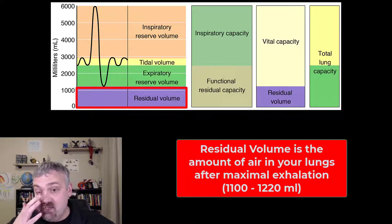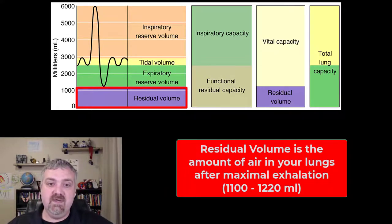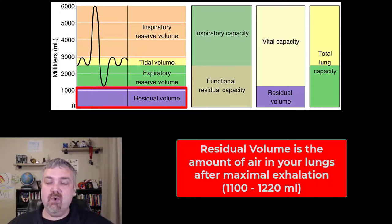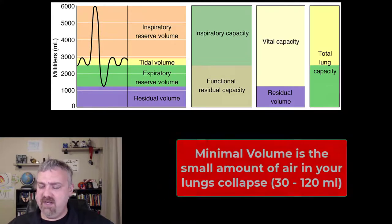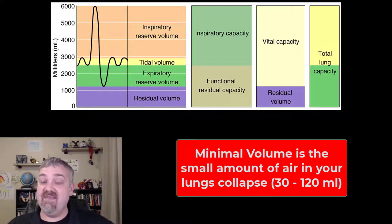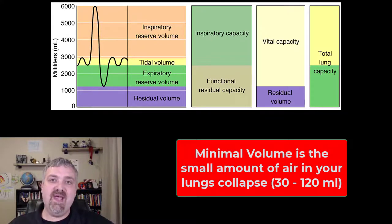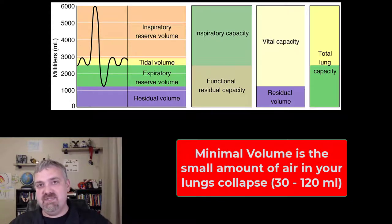There at the bottom on the left-hand side we have the residual volume. This would be how much air is in your lungs after you've blown as much out as you can — it is the air you can't control. Even once you've blown as much air out of your lungs as possible, you still have this residual volume, which is usually between 1,100 and 1,200 milliliters. The minimal volume would be a fraction of that — about 30 to 120 milliliters — how much air you have in your lungs even if both of them were to collapse. Think of an empty balloon that still has a little bit of air in it — that is called the minimal volume.